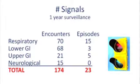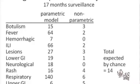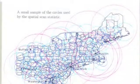We compared the same statistical method using encounters versus episodes, and the number of signals went from 174 to 23 — a huge difference. This also uses two different modelings of spatial and temporal noise: the first does it parametrically, trying to model it precisely; the second does it non-parametrically, adjusting for any purely temporal and purely spatial variation. There is a big difference in the number of signals between these approaches.